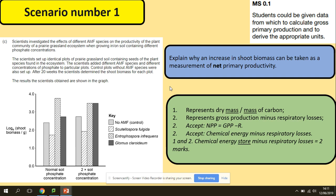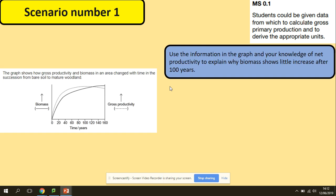Remember, always putting the equation in gives you marks. One more question here. We've got a graph, and here you need to be really careful. You've got biomass on the y-axis, but also you've got gross productivity on the y-axis as well against time. You need to use this information in the graph and your knowledge of net productivity to explain why biomass shows little increase after 100 years.